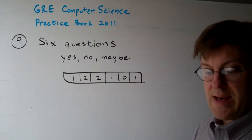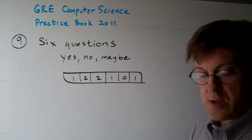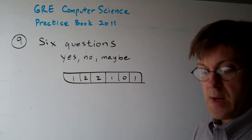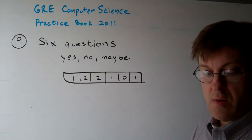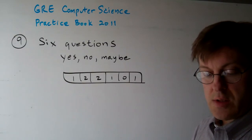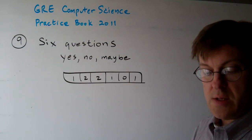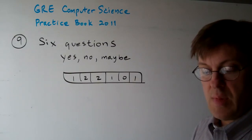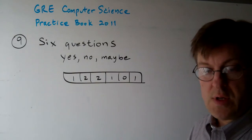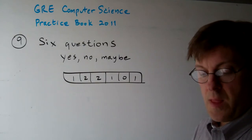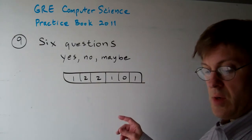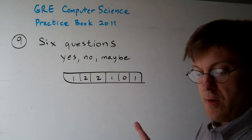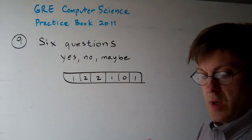A programmer is designing a data structure to collate the responses to this questionnaire. The programmer decides to use a base structure containing 6 memory locations, one for each question. Each element will contain a 2 for yes, a 1 for maybe, and a 0 for no.